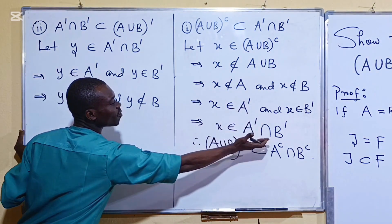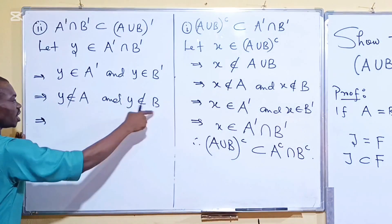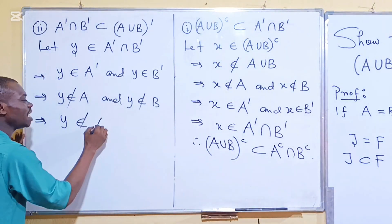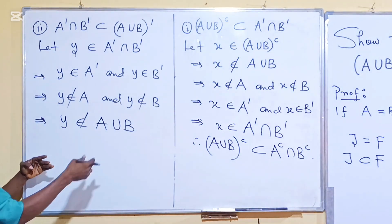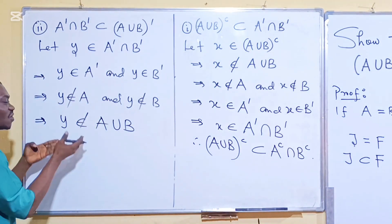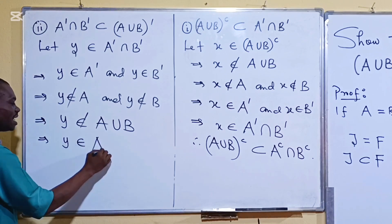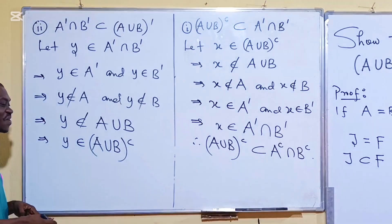you see now I will progress down to this point now. If Y is not in A nor in B, it simply means that Y will not also be in their union. I'm constructing it to get to where I'm going. And so if Y is not in their union, therefore it means that Y will be in the complement of their union. And you are done.